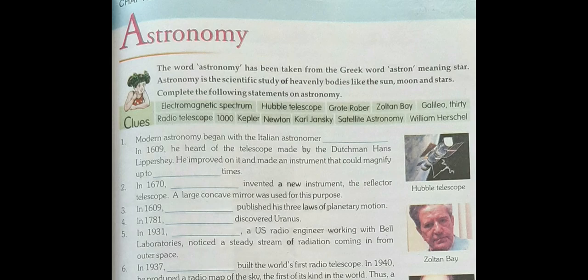Complete the following statements on astronomy. Modern astronomy began with the Italian astronomer Galileo. In 1609, he heard of the telescope made by the Dutchman Hans Lippershey. He improved on it and made an instrument that could magnify up to 30 times.